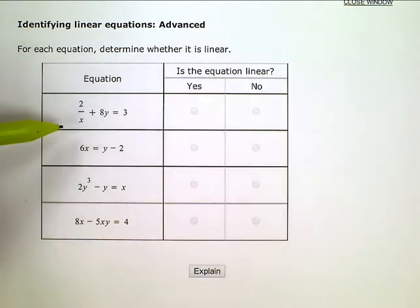Now, a linear equation can have an x and a y, but the x and the y won't have any exponents on them other than 1. So raised to the first power, which is just itself.